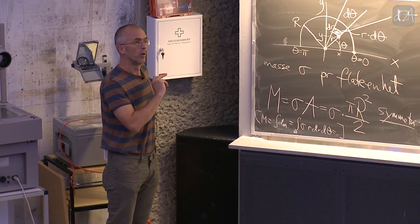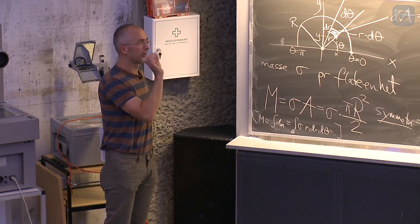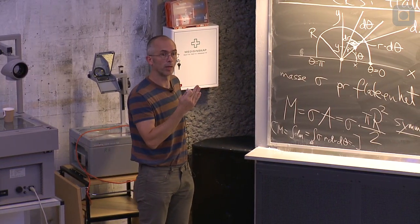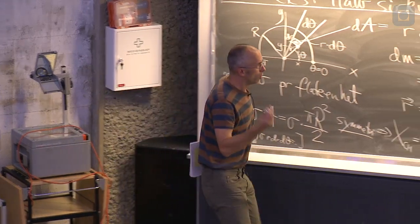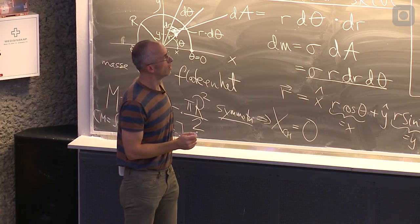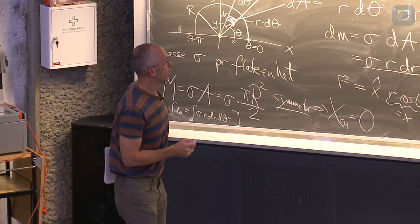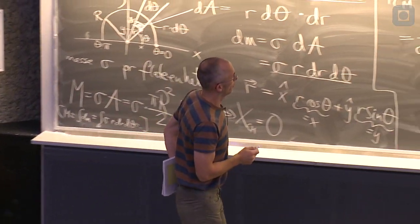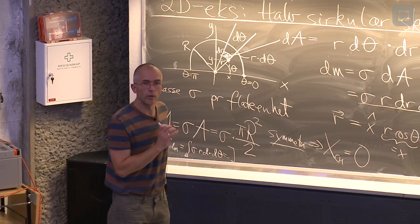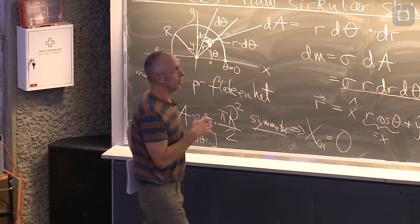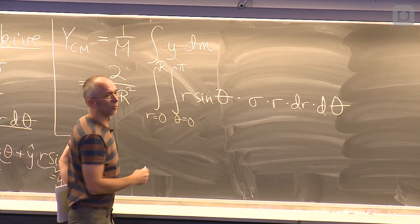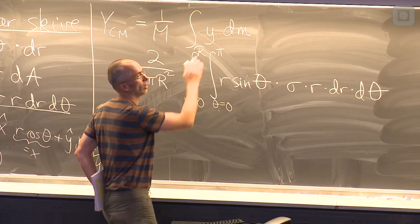Hvis vi hadde startet med å skrive det her som en sum, så måtte vi ha summert over, i utgangspunktet, små masse elementer. Og så måtte vi ha summert over både vinkelen og posisjonen, unnskyld, avstanden fra origo til det masse elementet. Det ville ha blitt en dobbelt sum. Og når både vinkelen delta theta og avstanden delta r har blitt infinitesimal, så hadde hvert summetegn blitt erstatt av et integraltegn. Og delta r er startet med dr, og delta theta er startet med d theta.